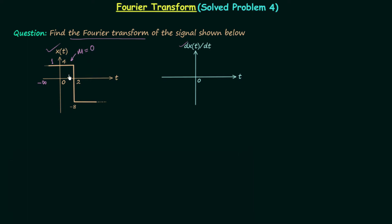After this, the second straight line is making 90 degrees from the time axis in the anti-clockwise direction. So the slope of this line is equal to tan(90°), or we can say infinity. Then we are having the third straight line from 2 to plus infinity. This one is the third straight line and it is also making zero degrees with the time axis, therefore the slope of this line is also equal to zero.